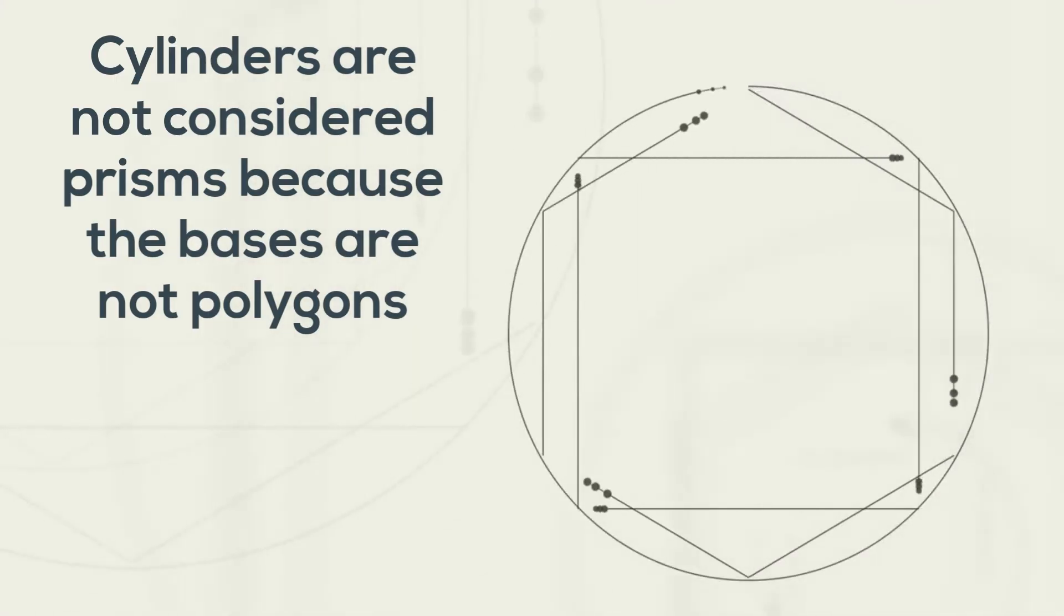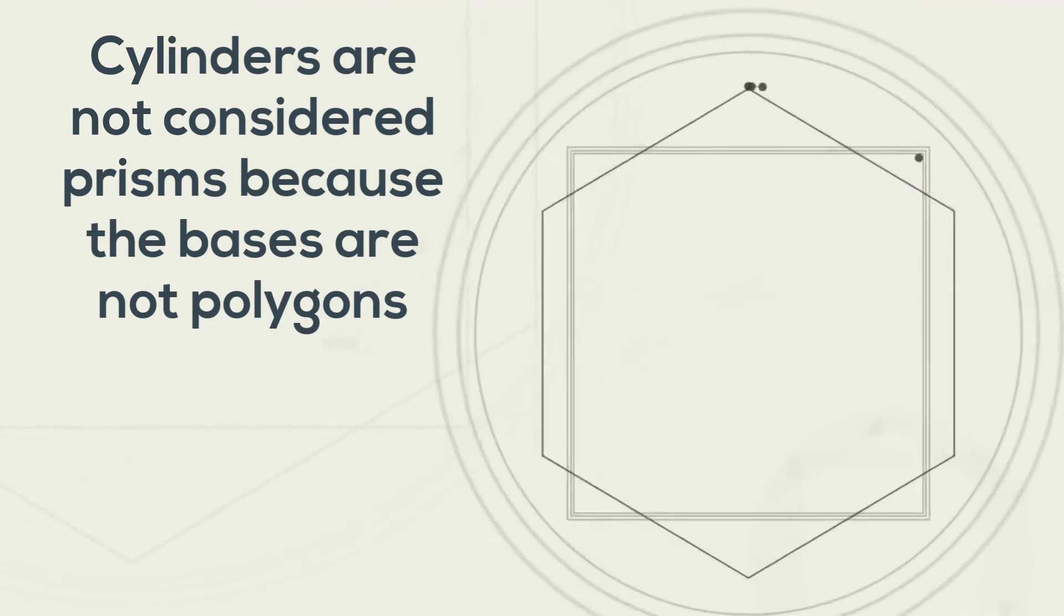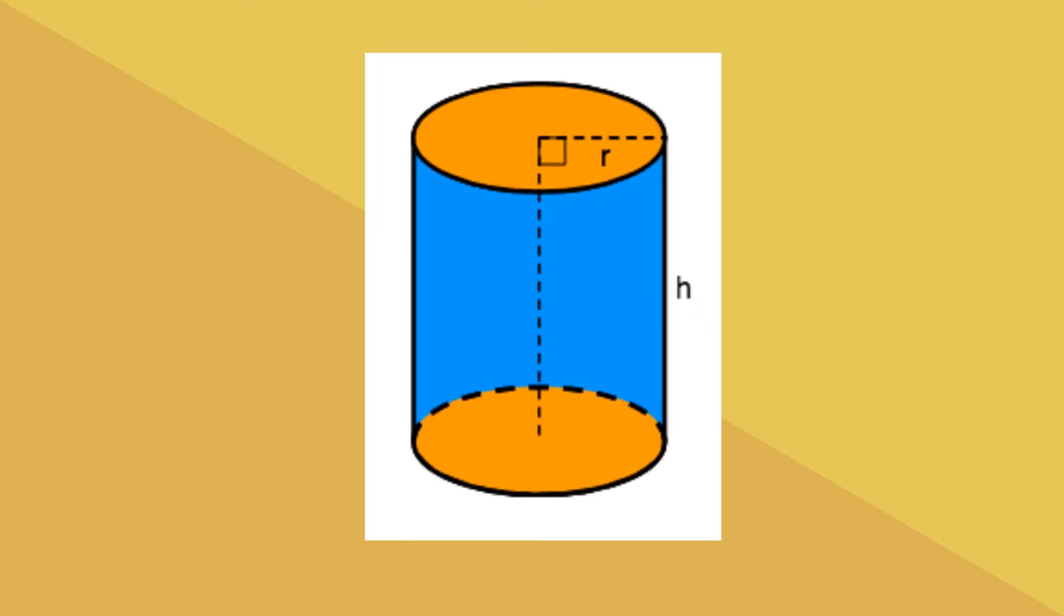Next, cylinders are not considered prisms because the bases are not polygons. They do not have straight lines. And here is a cylinder and it is not a prism.